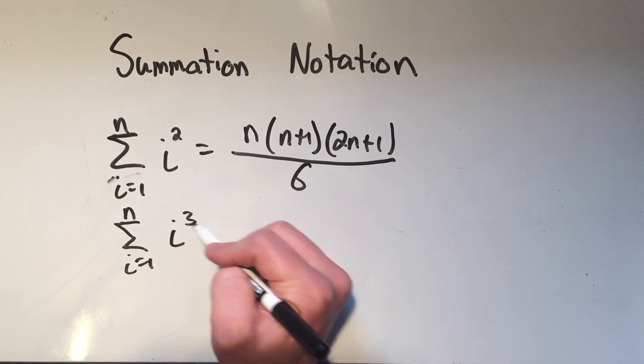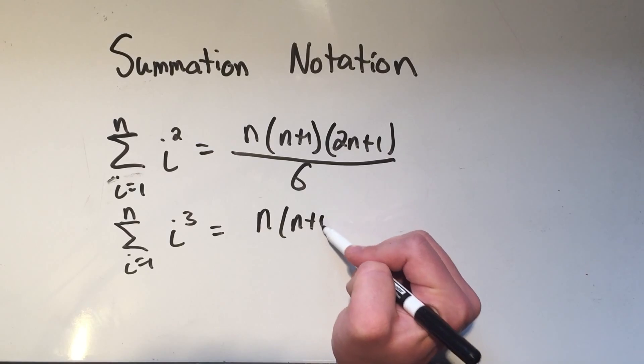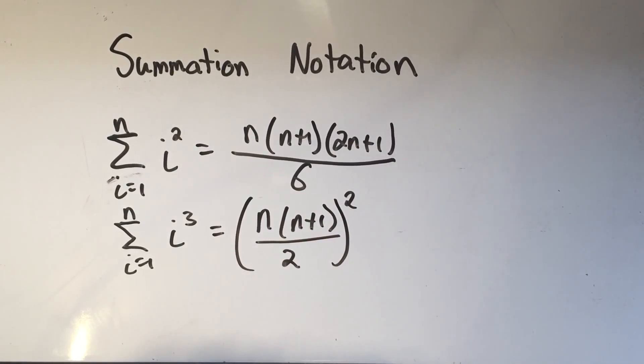And I'll do just one more for you. If you're summing i cubed, then that's n times n plus 1 over 2 squared. So it's the exact same formula as the sum of just i, but I square the whole thing.